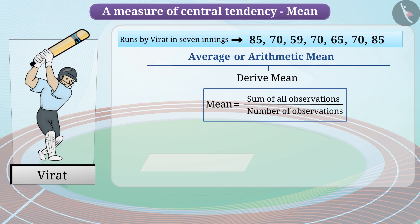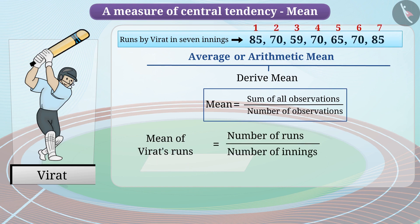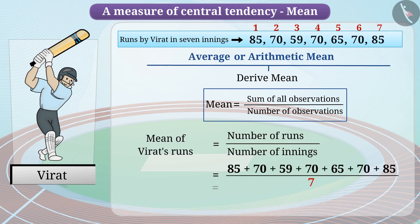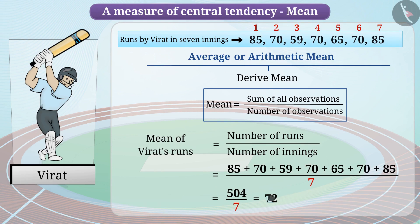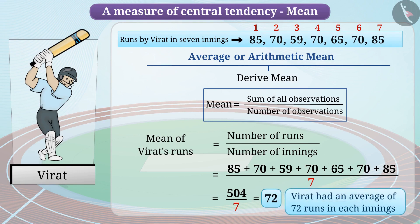For deriving mean for Virat's innings, we will add up the number of runs in the data and then divide it by the number of innings for which the data is provided. 504 divided by 7 is equal to 72. We deduce that the mean of Virat's number of runs is 72, meaning Virat had an average of 72 runs in each innings.